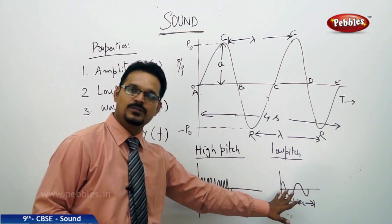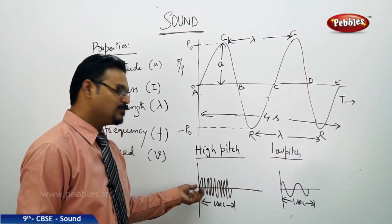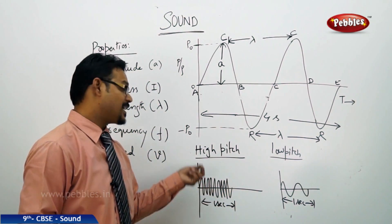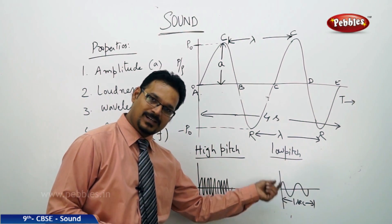So many number of waves are there in one second. There you have only two waves. One, two. Two waves in one second. So, time is same. But, number of waves are different. More number of waves means more frequency. More frequency means high pitch. Less number of waves. Low pitch. Less frequency.